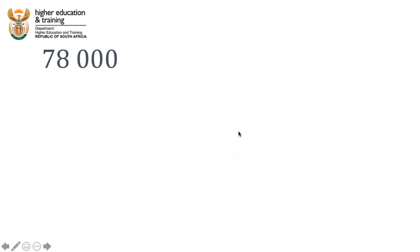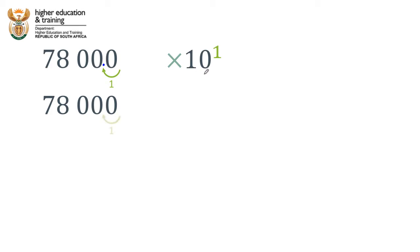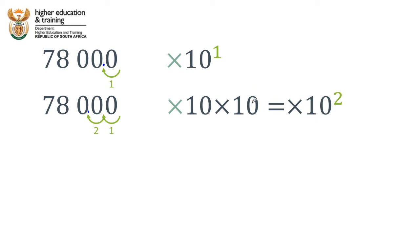Let's remind ourselves what those tricks are. Remember, if we move the decimal point one place to the left, that is the same as dividing the number by 10. So we need to compensate by multiplying the number by 10 to get back to the original number. If we move the decimal point two places, that's the same as dividing by 100, so we need to undo that by multiplying by 10 times 10 — two factors of 10, or 10 to the power 2.